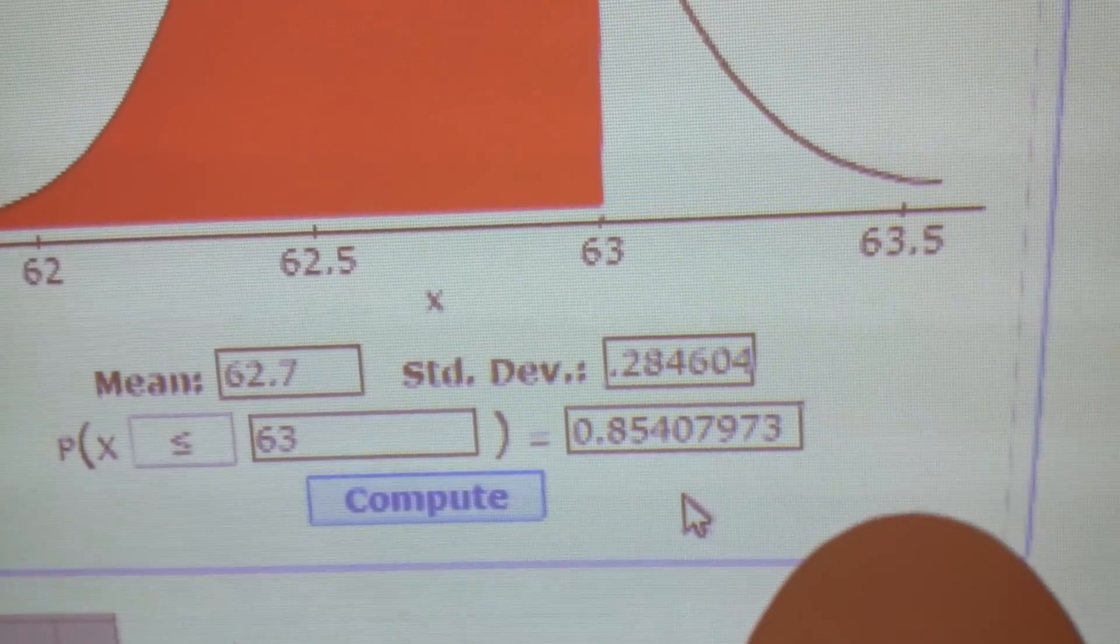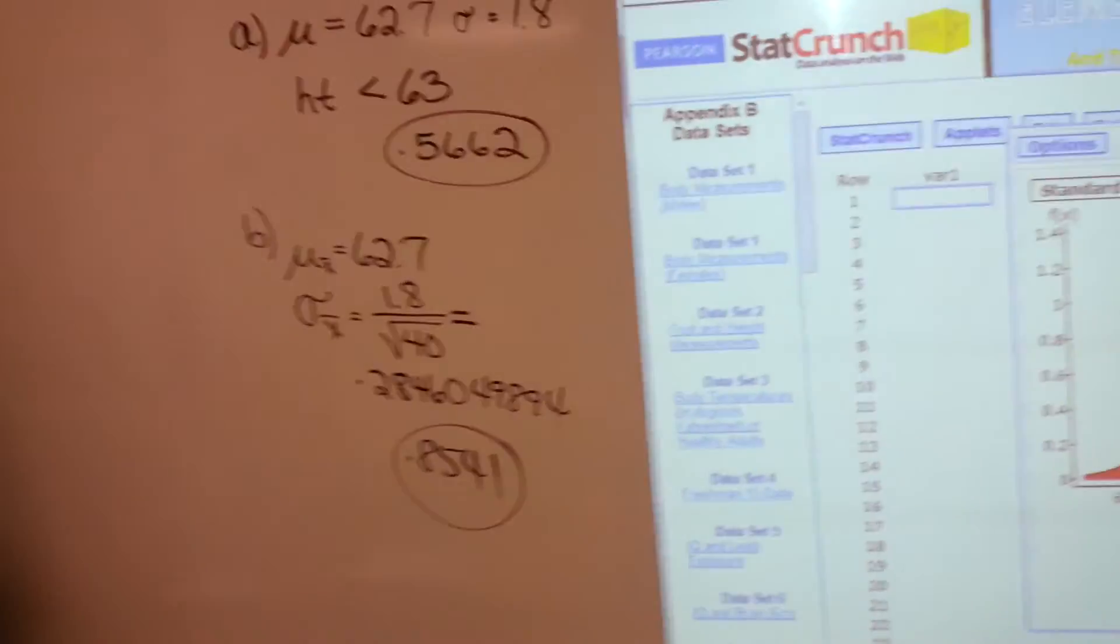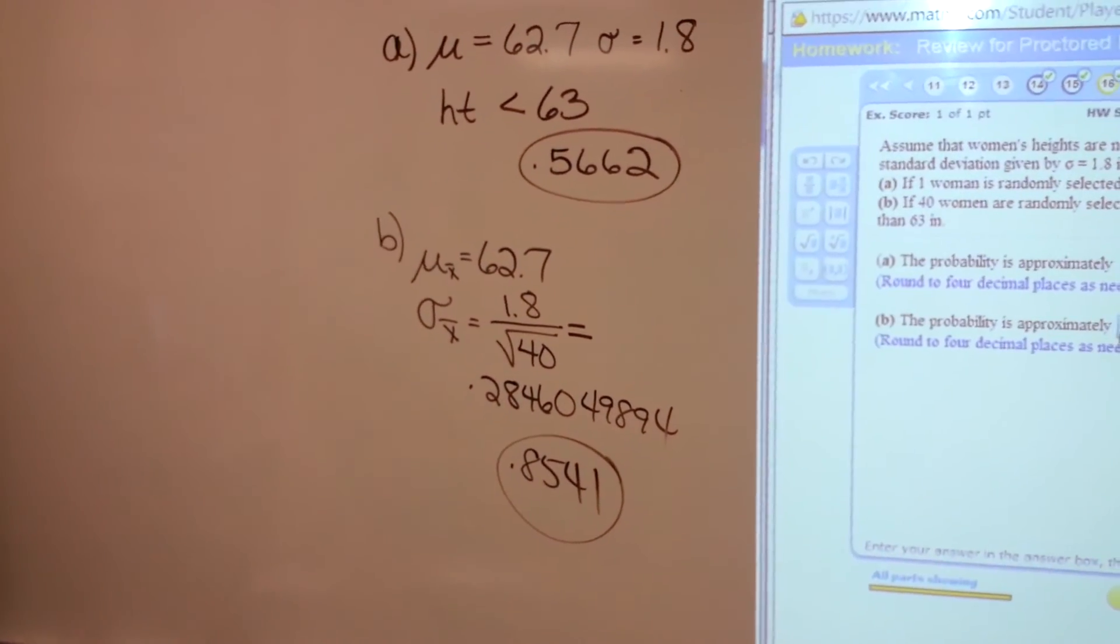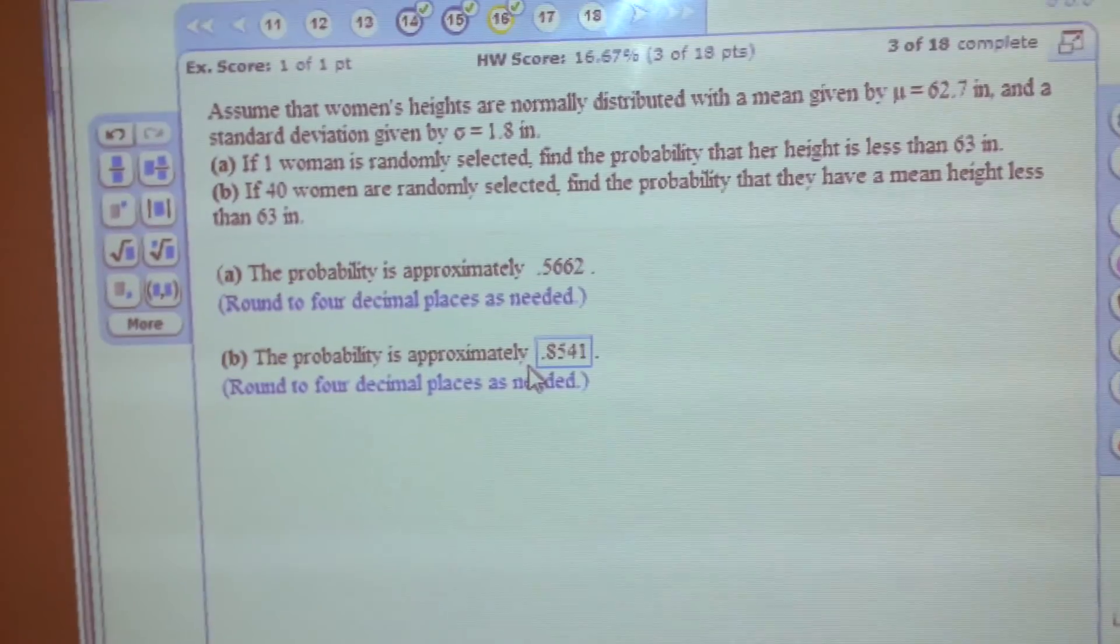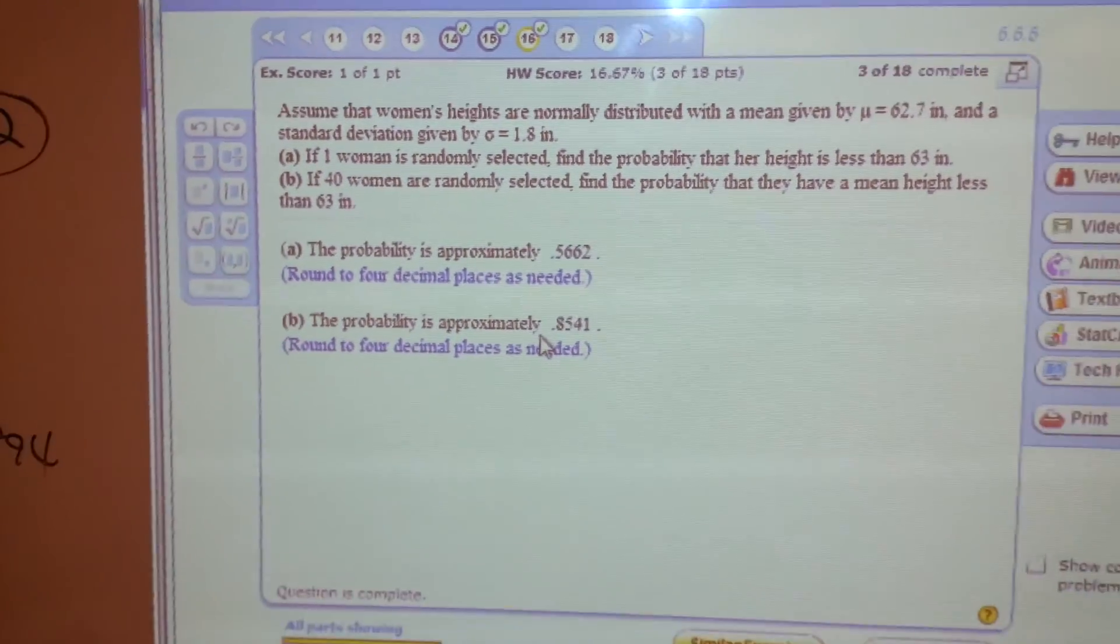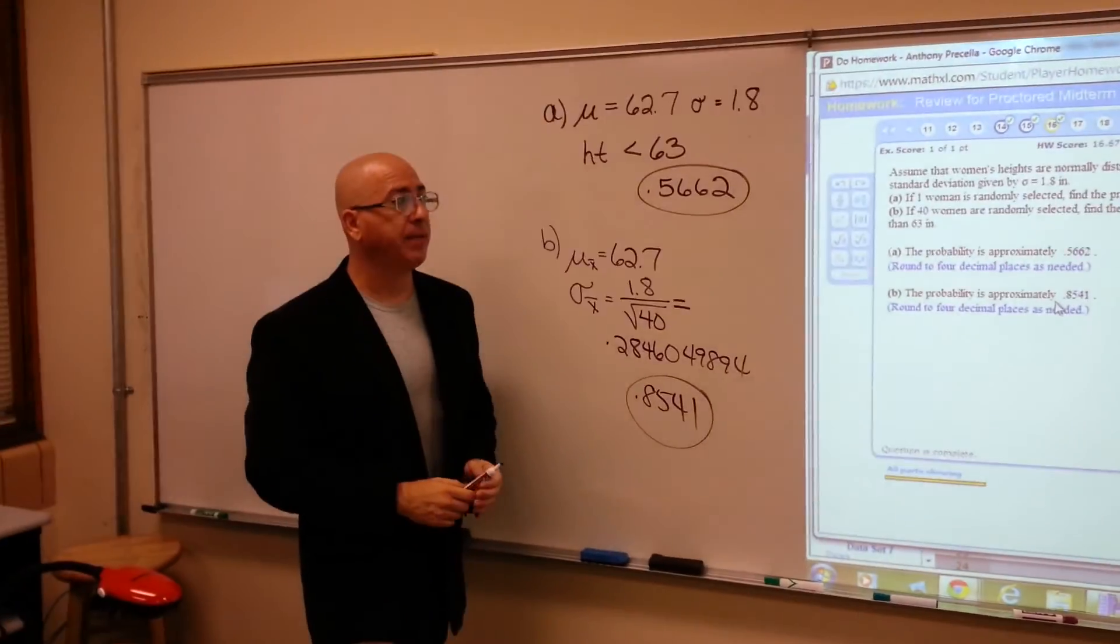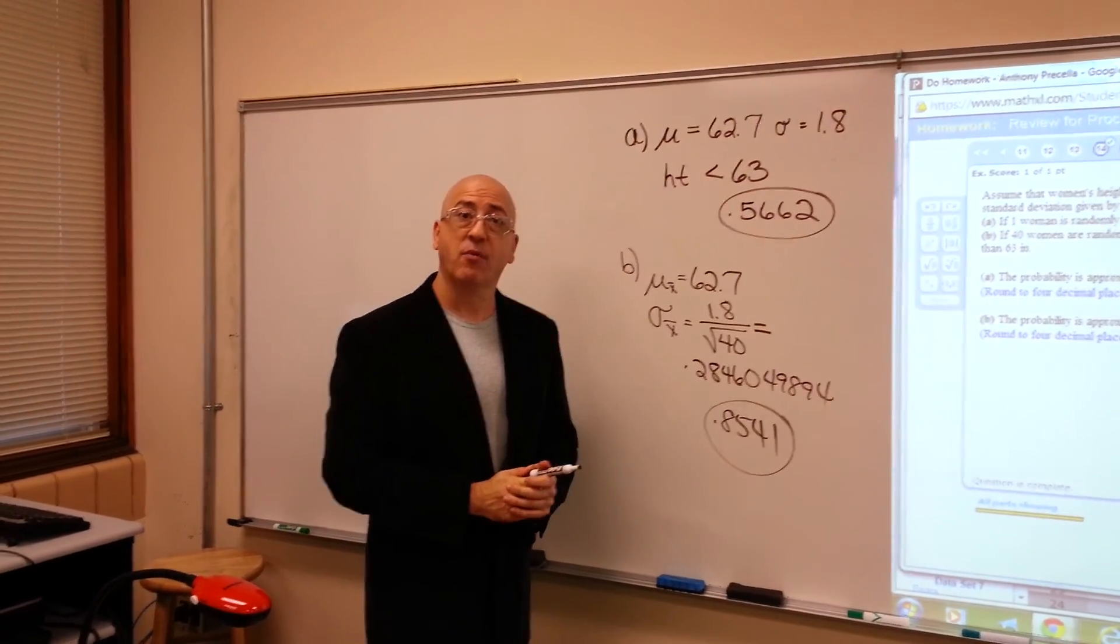Is that rounded to four places correctly? Yes. I'll go back over here: 0.8541. A nice little software package, StatCrunch. Worth your time to get familiar with it because it can sure help simplify these calculations.